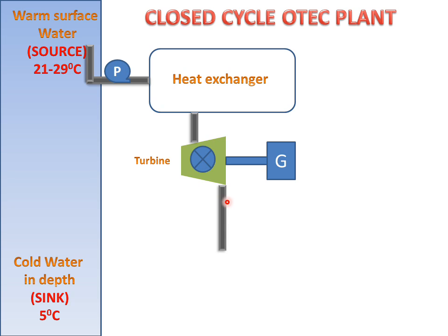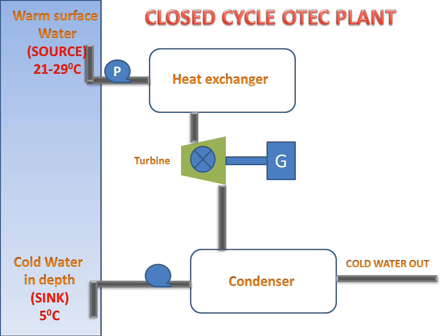After the turbine works, the fluid will go to the condenser. The condenser is attached to cold water from the depth, and we use that cold water for heat exchange in the condenser. The cold water will then exit from this side.